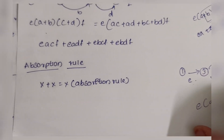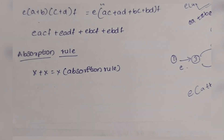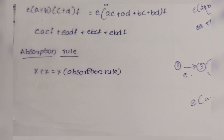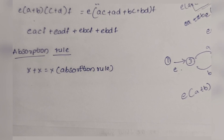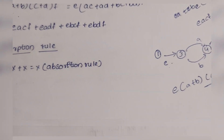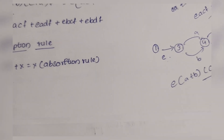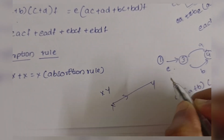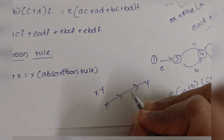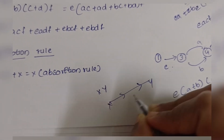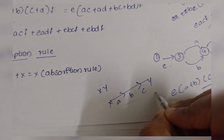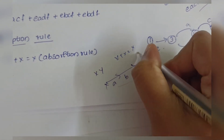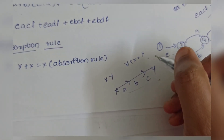Next, the absorption rule: X + X = X. In simple terms, if X and Y denote the same set of paths, then the union of these sets is unchanged. Consequently, X + X = X — this is the absorption rule.